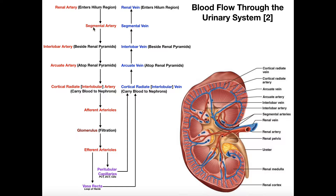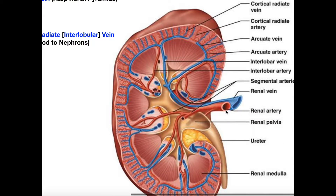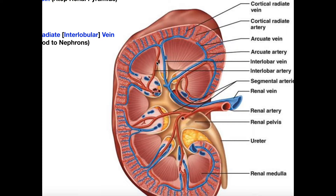That renal artery is going to divide into what we call segmental arteries. Looking at this kidney, we see the renal artery divides into these segmental arteries. What the segmental arteries do after they branch from the renal artery is they take blood up until you get around to the minor calyx region — we talked about that in the anatomy video. Then the segmental arteries divide into what are called interlobar arteries, which go from the base to the top of each renal pyramid.